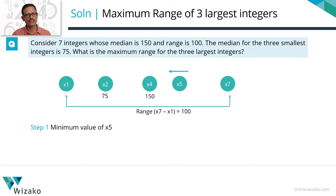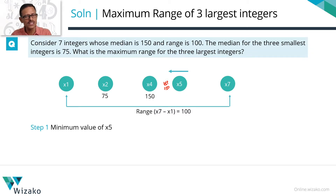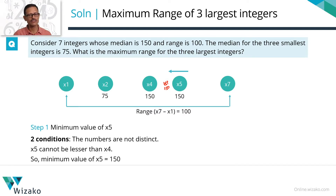Step one: minimize x5. Since the numbers are in ascending order, x5 must be greater than or equal to x4. The question never states that the integers are distinct, so x5 can equal x4. The temptation is to set x5 to 151, but since numbers need not be distinct, the minimum possible value for x5 is actually 150 — equal to x4.